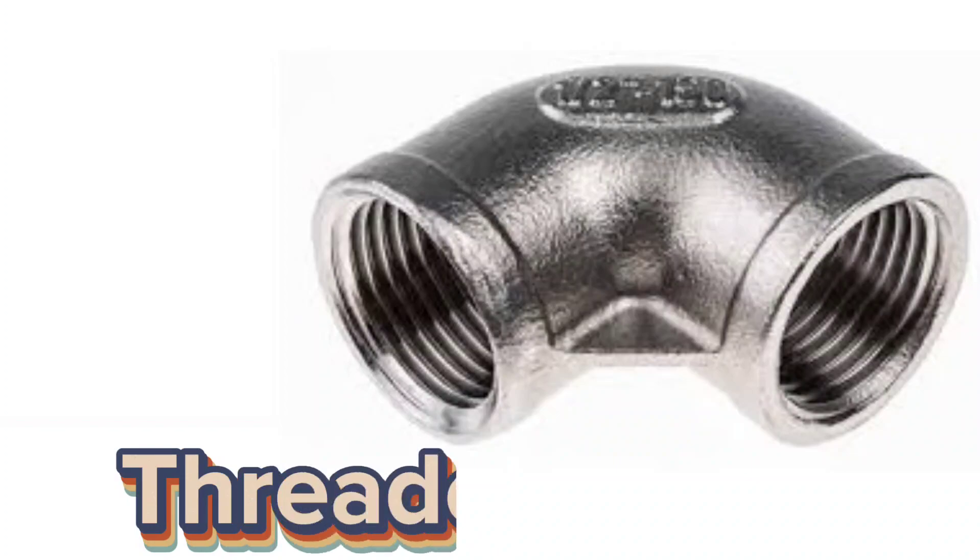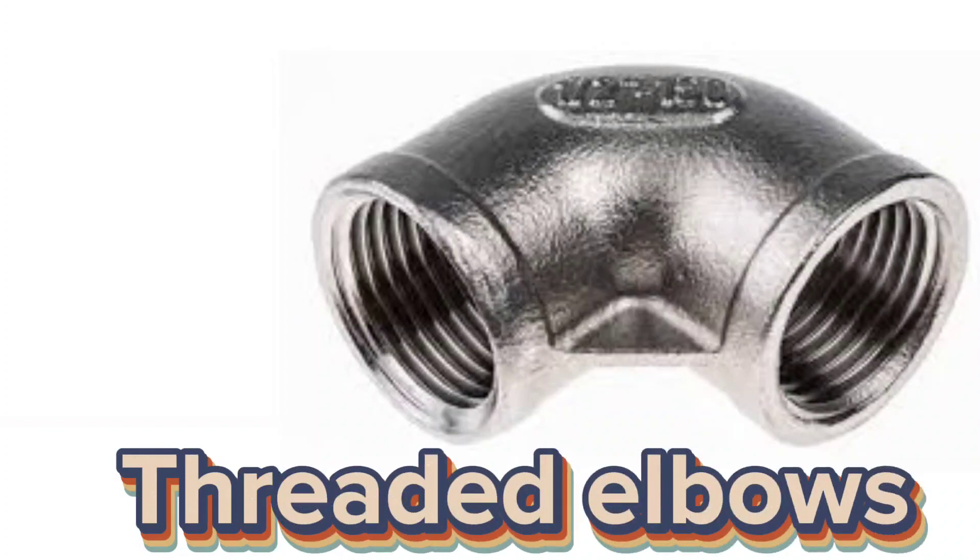One of the types of pipe elbows is threaded elbows. Threaded pipe elbow fittings consist of a female NPT thread by female NPT thread on either side of an elbow pipe fitting. Threaded elbows do not require welding and are easy to replace.